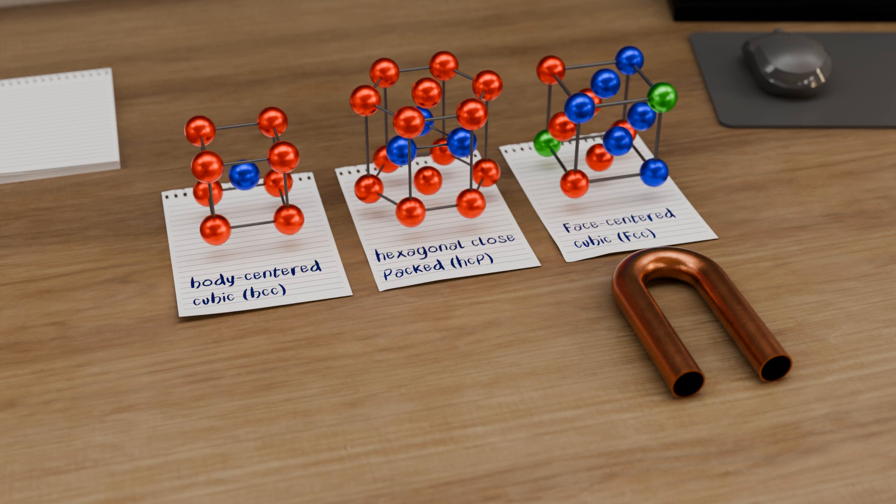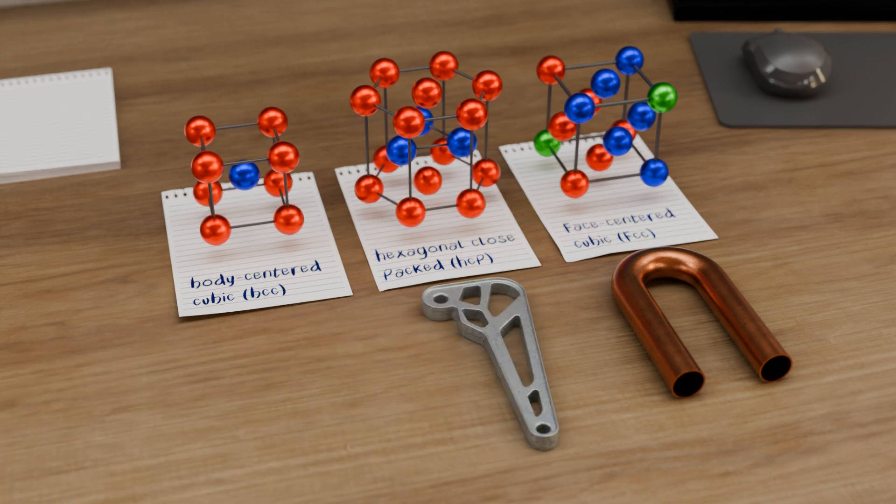Typical metals with a hexagonal lattice structure are zinc and magnesium. Metals with this lattice structure are relatively brittle and do not form well. These metals tend to break before they can be significantly deformed. For example, zinc die castings break very quickly under load without deforming significantly. Metals with hexagonal lattice structures are therefore very difficult to form.